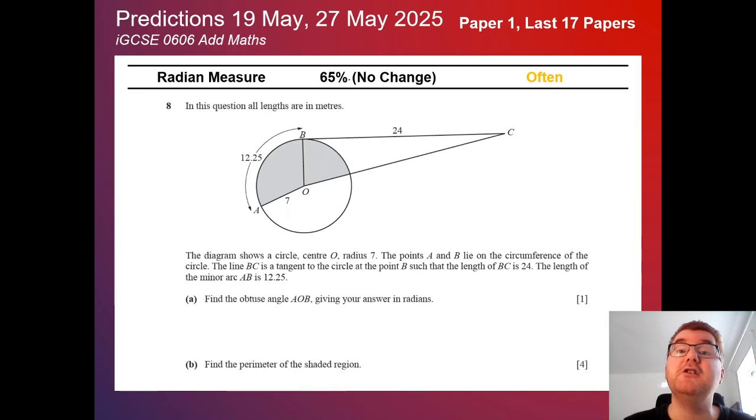Radian measure at 65%, so no change. Usually appears on one of the papers, that's why we're up 65%. Again, this is a very typical question, working out perimeter, so arc length, and also areas as well.